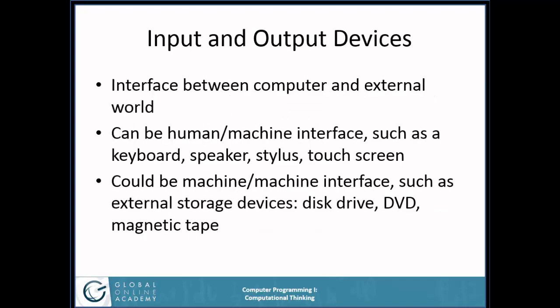Input and output devices are interfaces between the computer and the external world. That could be a human-machine interface such as a keyboard, speaker, stylus, or touch screen. Or it could be a machine-to-machine interface such as external storage devices, disk drives, DVDs, or magnetic tape — things not meant for a human to read directly, but saved for later use as input by this computer or another.